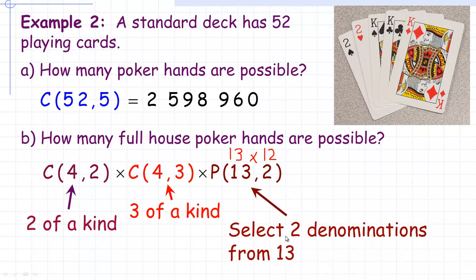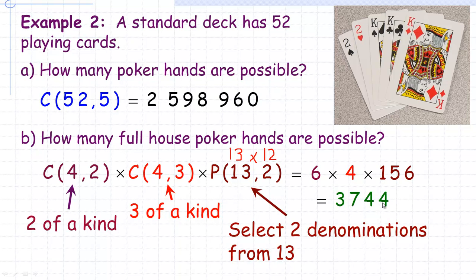4 choose 2 is 6, 4 choose 3 is 4, and 13 permute 2 is 156. So there are 3,744 different full house hands possible.